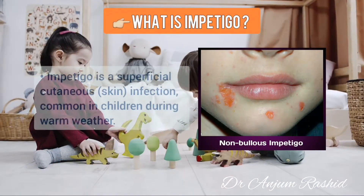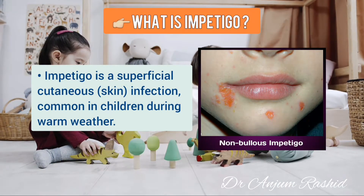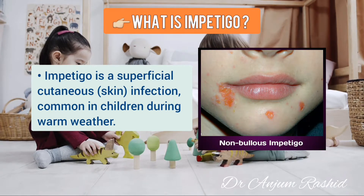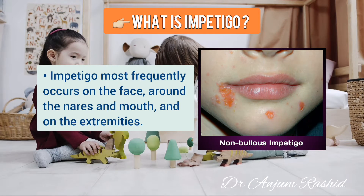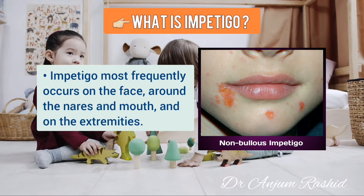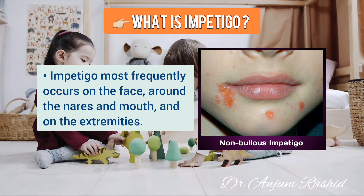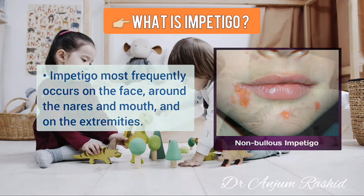Now what is impetigo? It is a superficial cutaneous infection which is common in children during warm weather. Impetigo most frequently occurs on the face, around the nares and the mouth and on the extremities.